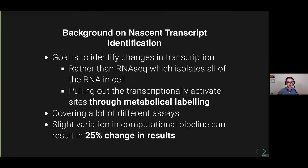Quick background on nascent transcript identification. The goal is to identify changes in transcription of the RNA and what's going on in the cell at that specific point in time, rather than RNA-seq which isolates all of the RNA in the cell at a steady state — your mRNA and things that have matured — versus what's actually being transcribed. So you can get an actual response to things like heat shock or viral infection, by pulling out transcription activity sites through metabolic labeling.